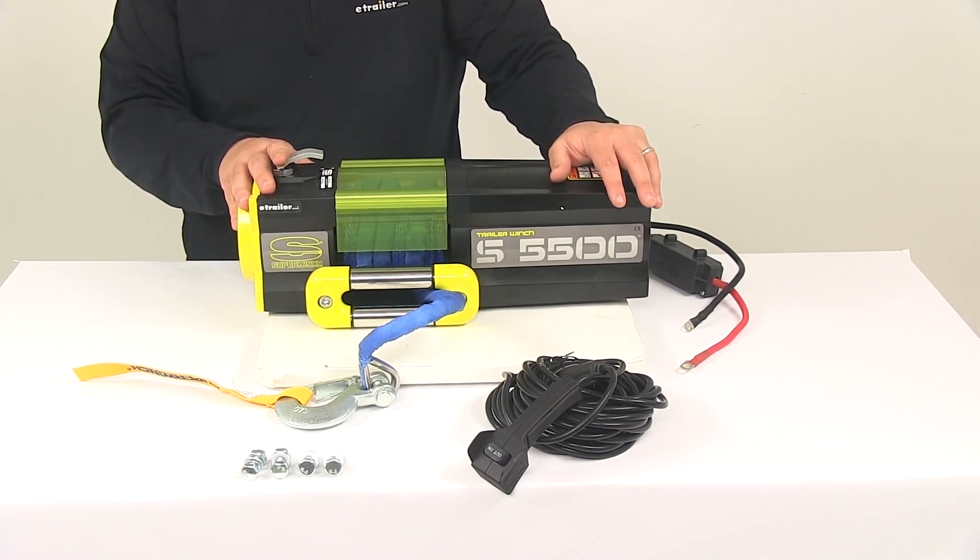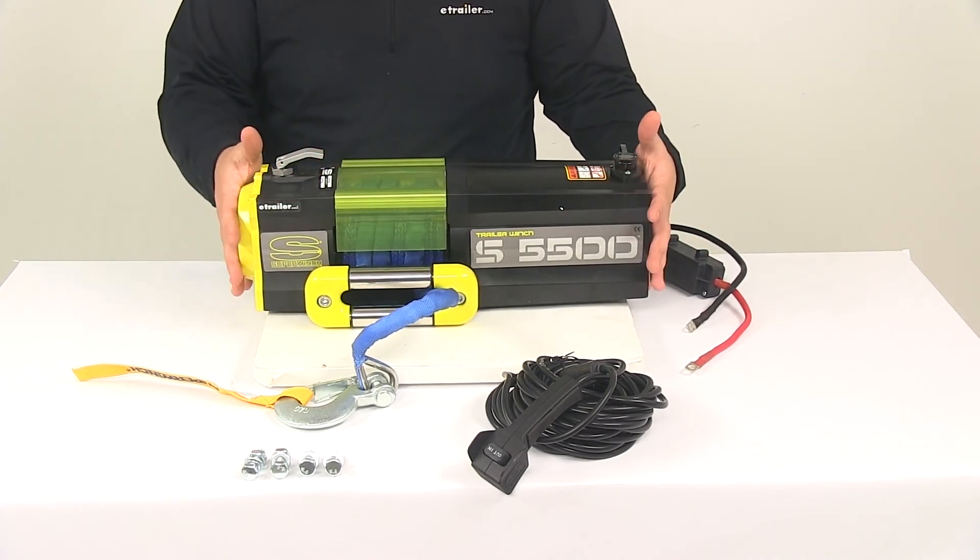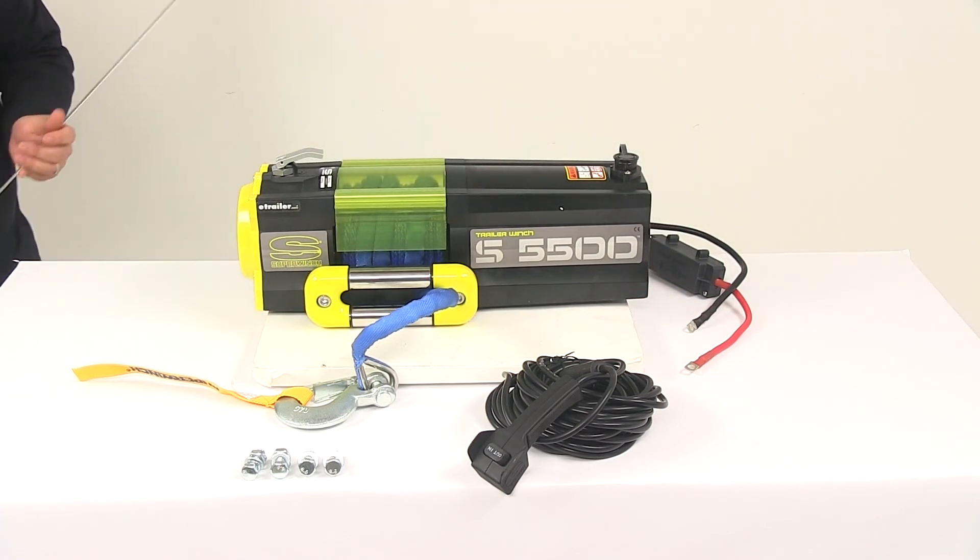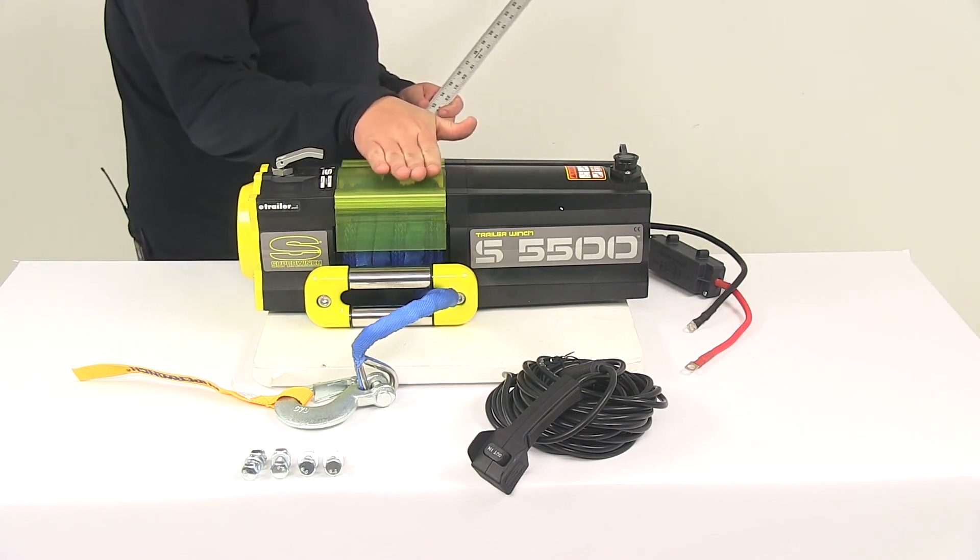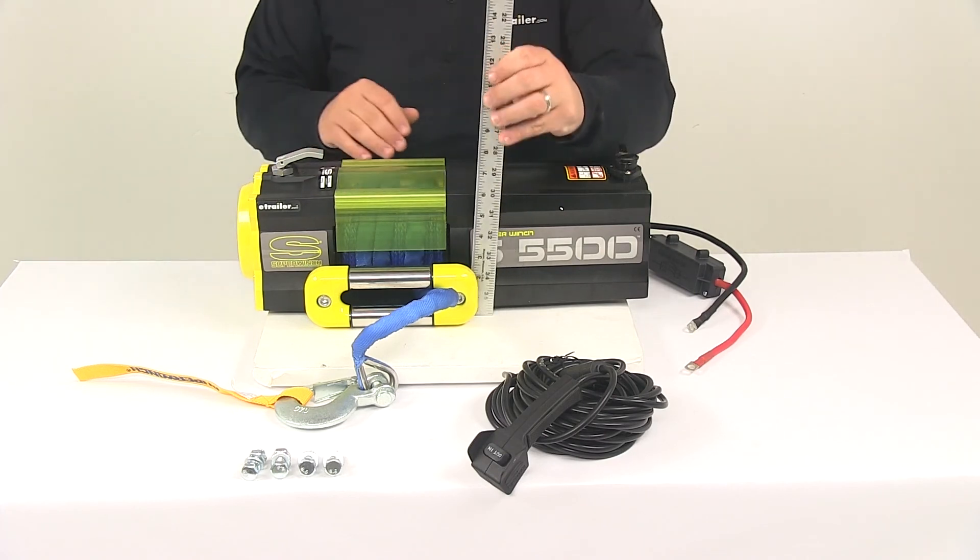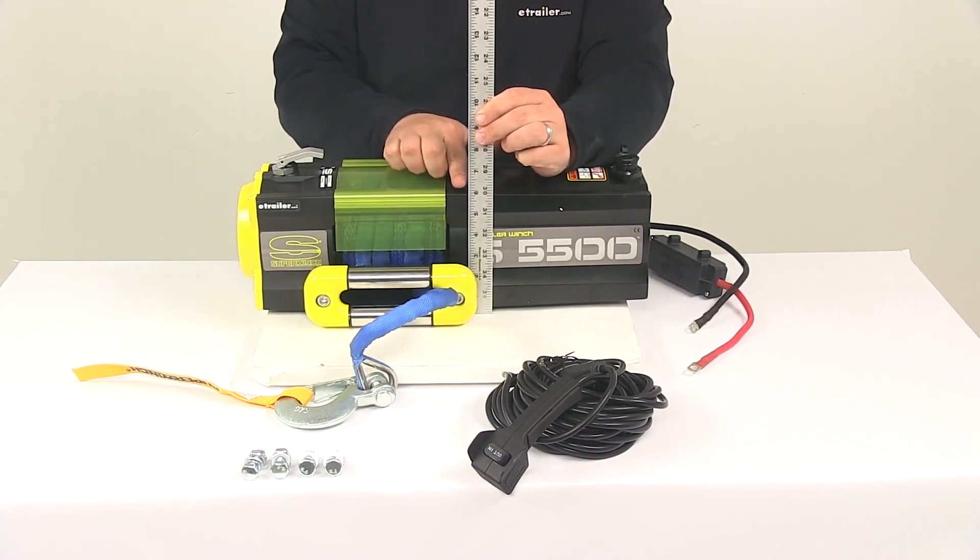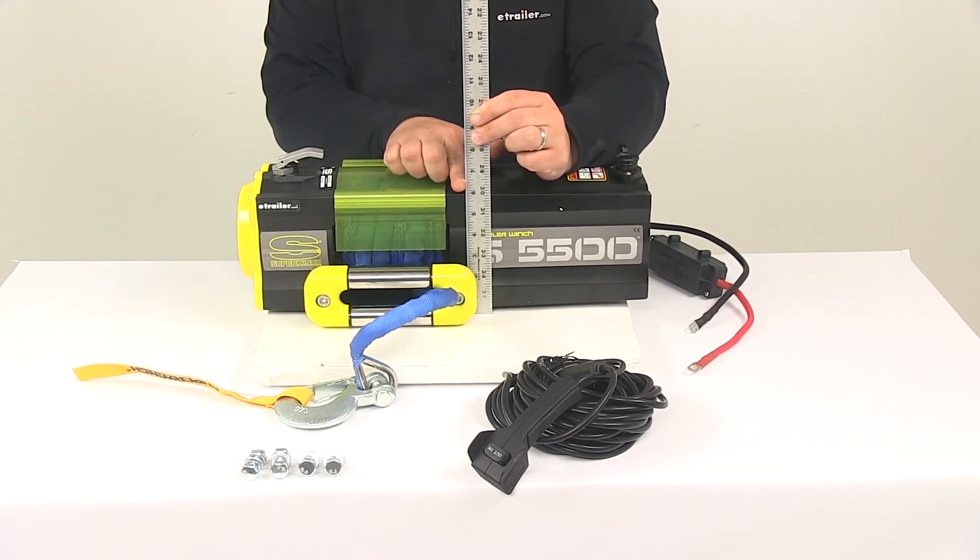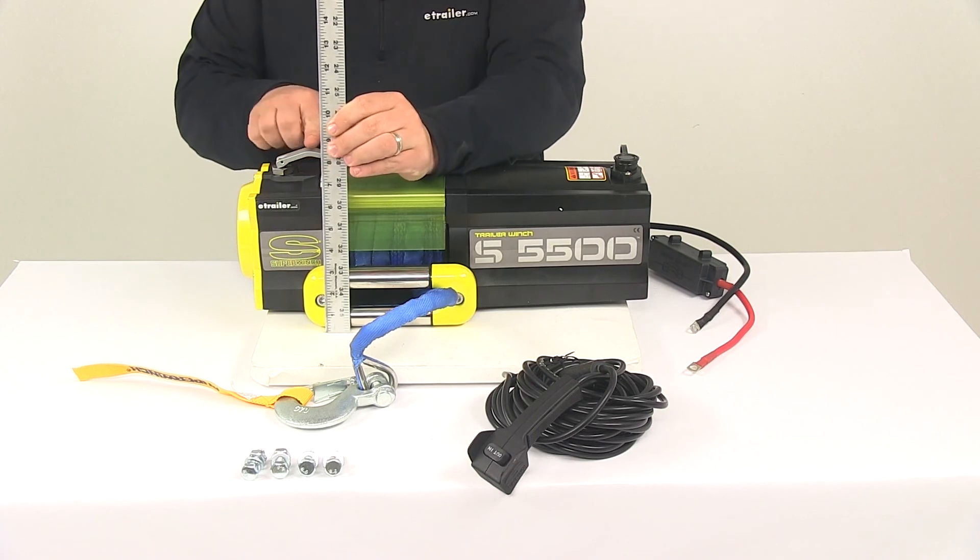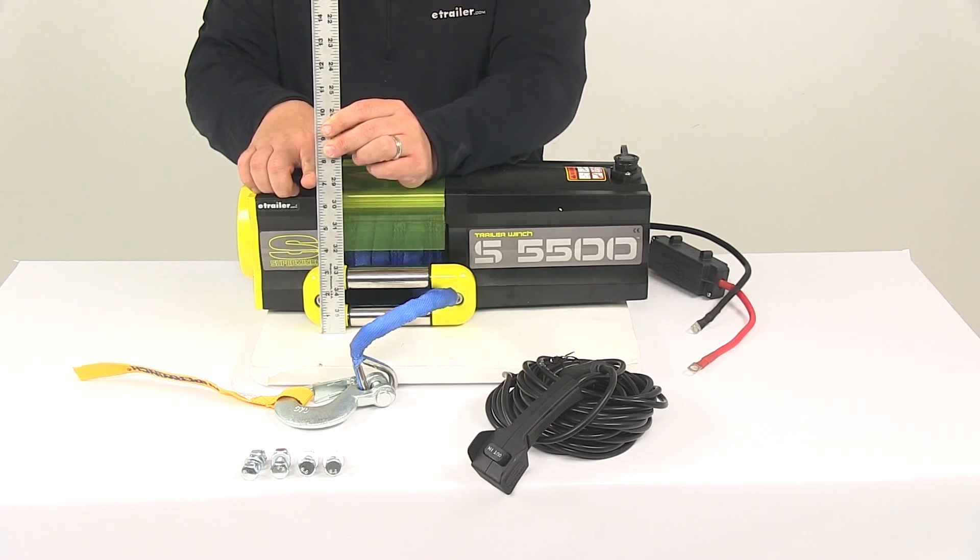We already took measurements of the base plate and mounting holes, so now I want to go over some measurements of the actual winch itself. I'm going to start with the height measurements—two height measurements. One is to this point right here; the other is to the highest point, which is the top of the lever. Going straight out to this point, that gives us about six and one-quarter of an inch tall. To the top of the lever, that gives us about seven and one-eighth of an inch tall.